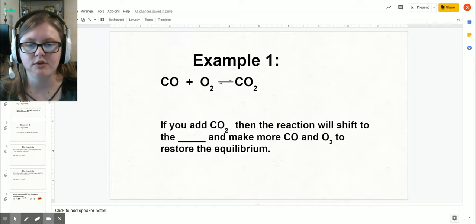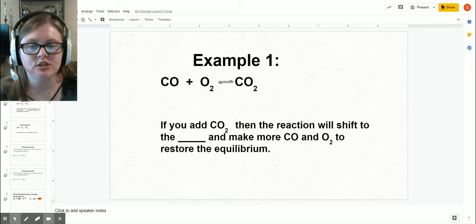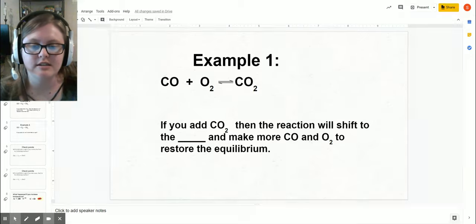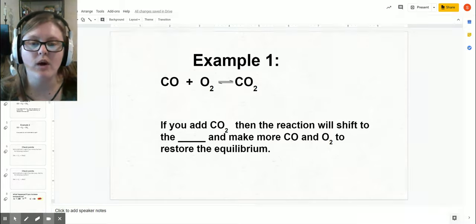If you add a lot of CO2 to this reaction, more CO2 on the right side, it wants to get rid of it. So it wants to shift to the left to get rid of the CO2, turn the CO2 into CO and O2. It will shift away from the thing that you added.